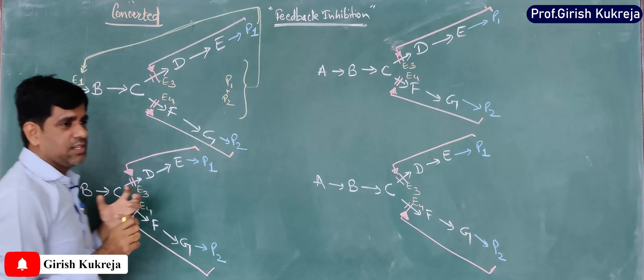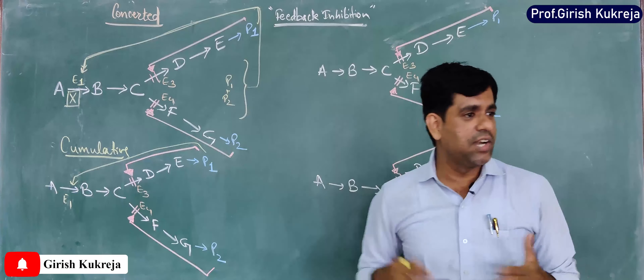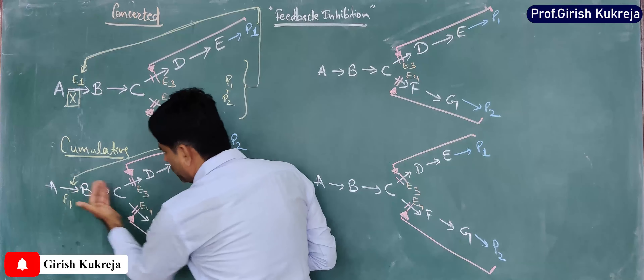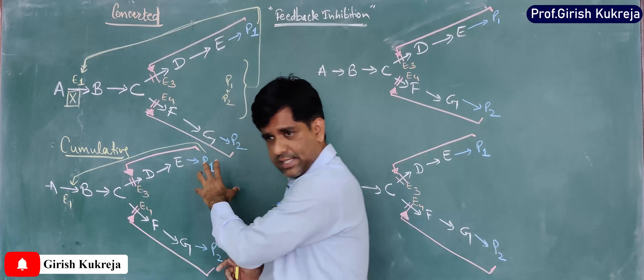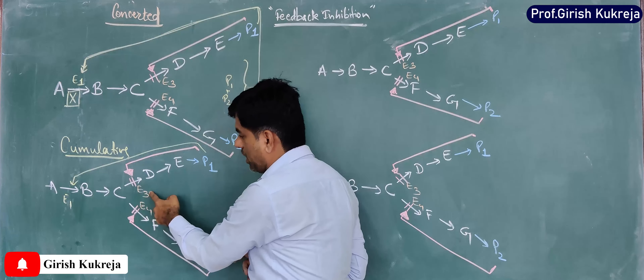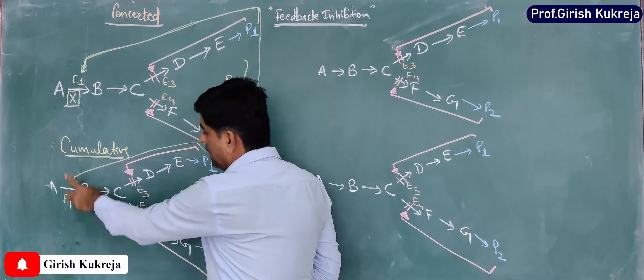A more fine-tuned metabolic control is cumulative feedback inhibition. Here, E1 has binding sites for both P1 and P2. When P1 binds to E1 alone, it inhibits the enzyme by a certain percentage — say 40% of the activity is reduced. So the pathway from A to B to C continues at a reduced rate, and all C is now directed toward P2. P1 also goes and stops the action of E3 and inhibits E1 to some extent.